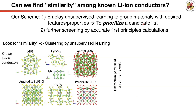To overcome these general challenges in applying machine learning for materials discovery, we propose a completely different approach. Instead of supervised learning to train a model to predict material properties, we adopt unsupervised learning to group similar materials. By grouping together good materials, we can identify a prioritized candidate list and perform accurate material screening, for example using first-principles methods.